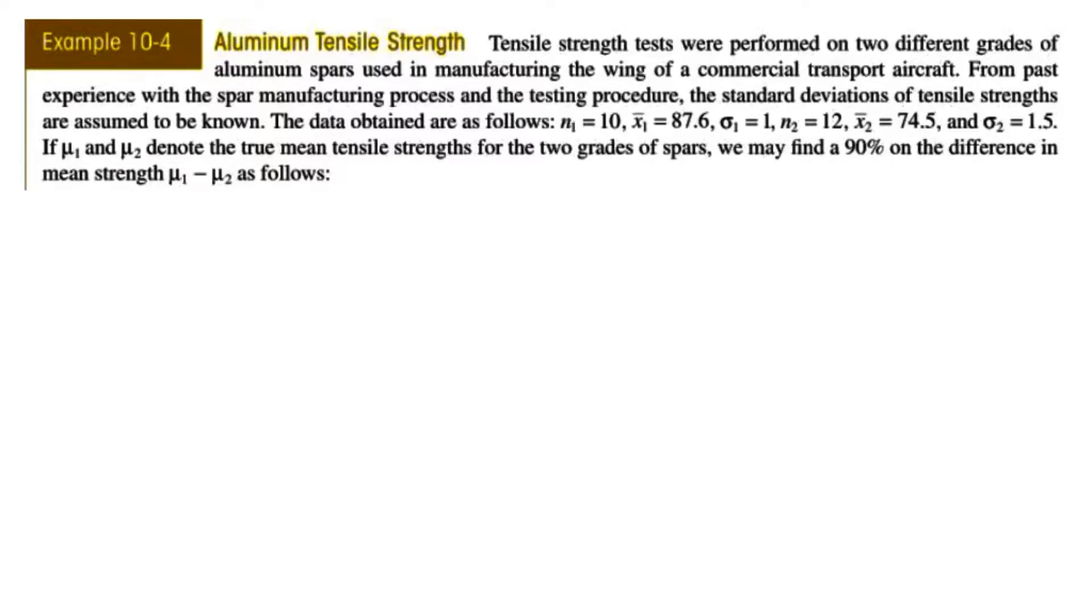The problem statement says that tensile strength tests were performed on two different grades of aluminum spars used in manufacturing the wing of a commercial transport aircraft. From past experience with the spar manufacturing process and the testing procedure, the standard deviation of tensile strength are assumed to be known. So this part gives you the information that you know the standard deviation of the two populations.